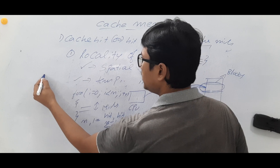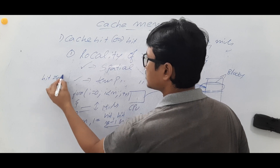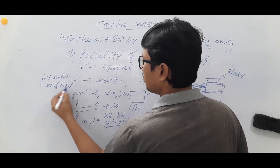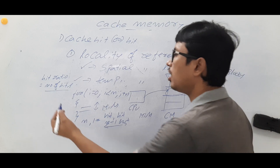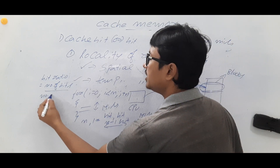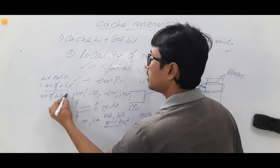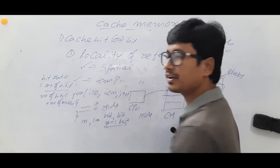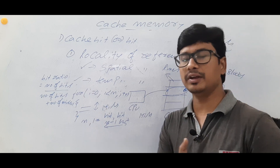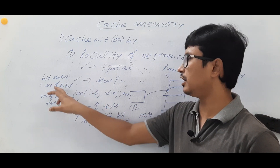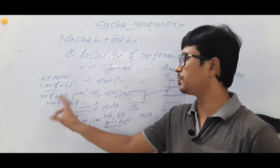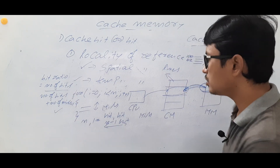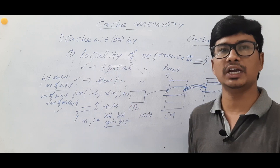This is why hit ratio improves. Hit ratio is defined as the number of hits divided by the total number of references, which equals number of hits plus number of misses. Because of temporal locality, the hit ratio increases significantly.